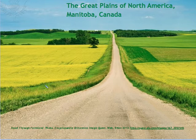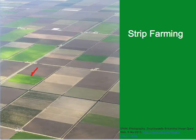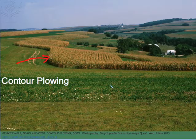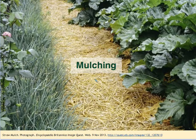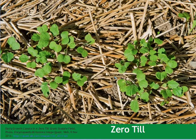Here in Manitoba, Canada, just one portion of the most productive Loess deposit on the planet — the Great Plains of North America — many of these practices are in use. Strategies such as wind breaks, strip farming, contour plowing, and mulching are widely used. But in recent times, the zero-till method has been gaining in popularity throughout the Great Plains of North America.